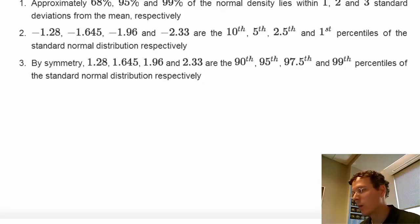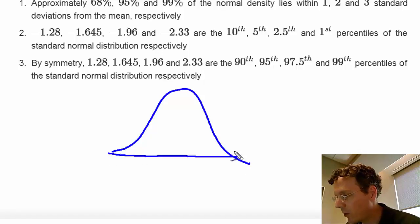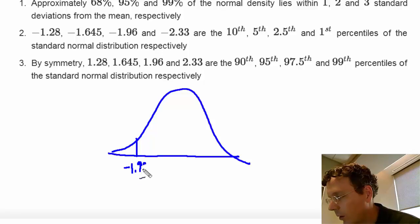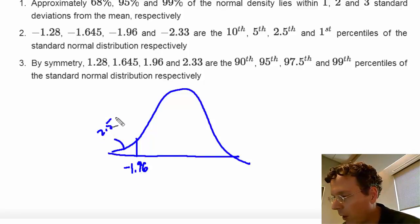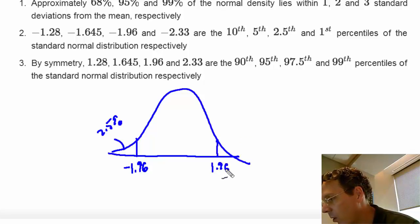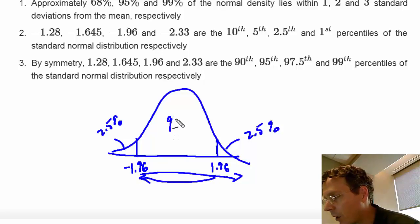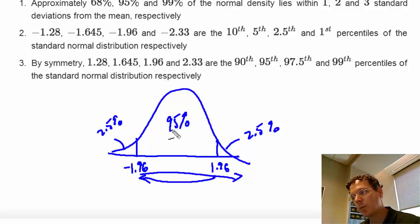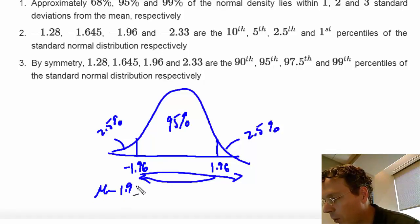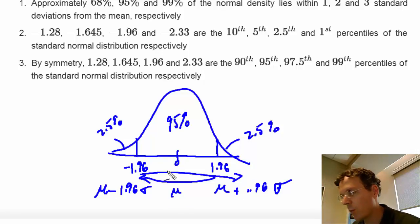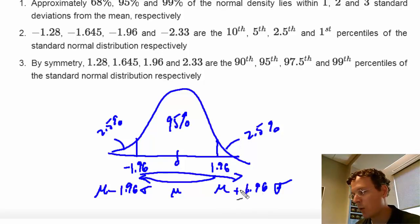Another important quantile to remember is 1.96, often rounded to 2. Negative 1.96 is the point such that 2.5% of the normal distribution mass lies below it, and positive 1.96 is the point such that 2.5% lies above it, meaning 95% lies in between. For a non-standard normal, these points are mu minus 1.96 times sigma and mu plus 1.96 times sigma. Plugging in mu equal to 0 and sigma equal to 1 gives back 1.96 for the standard normal.